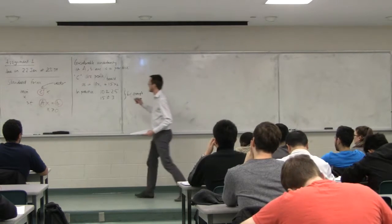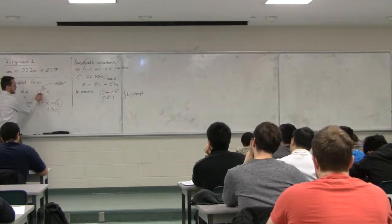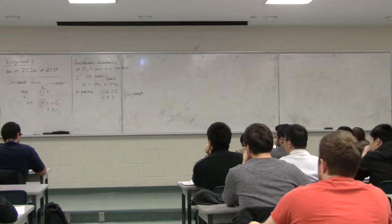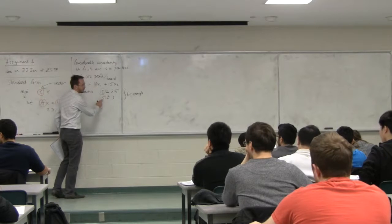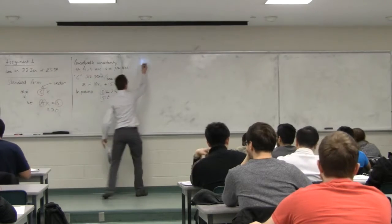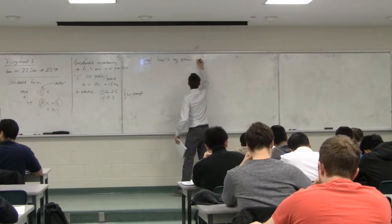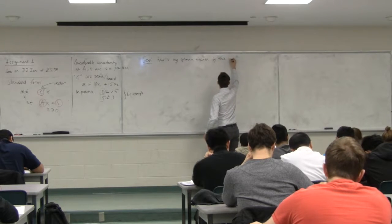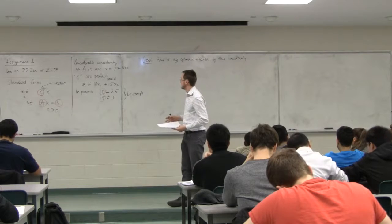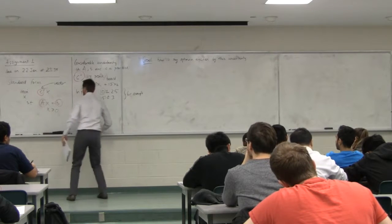For example, the C vector. In the circuit board example, the C values are the profit per board as in 10x1 plus 15x2. In practice, it might be that we don't know those values quite so well. It might be 10 plus or minus 2.5, or 15 plus or minus 3. Our goal today is, how is my optimum affected by this uncertainty?